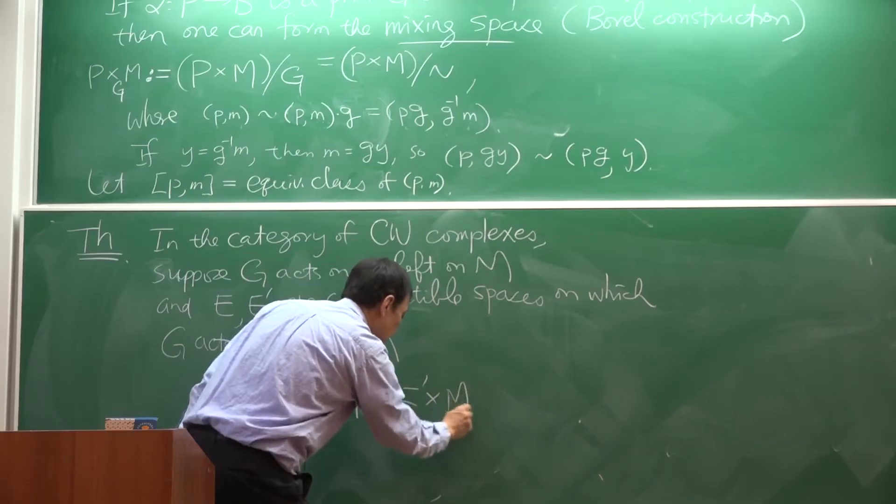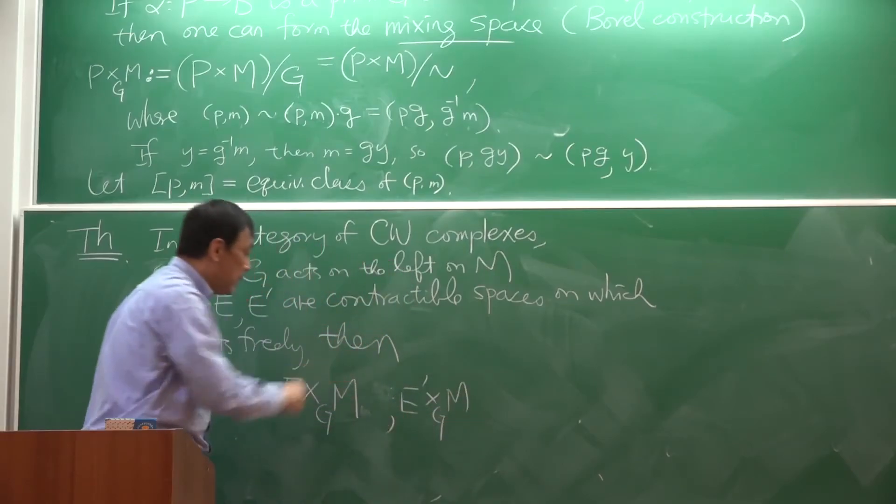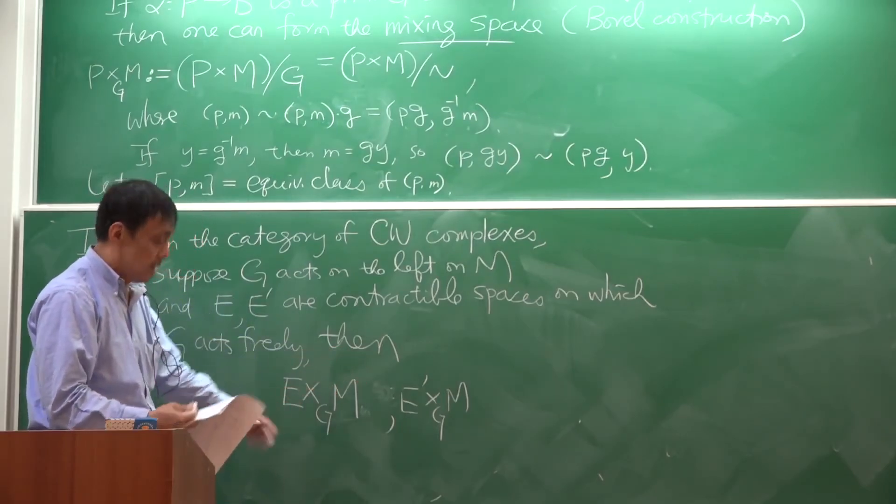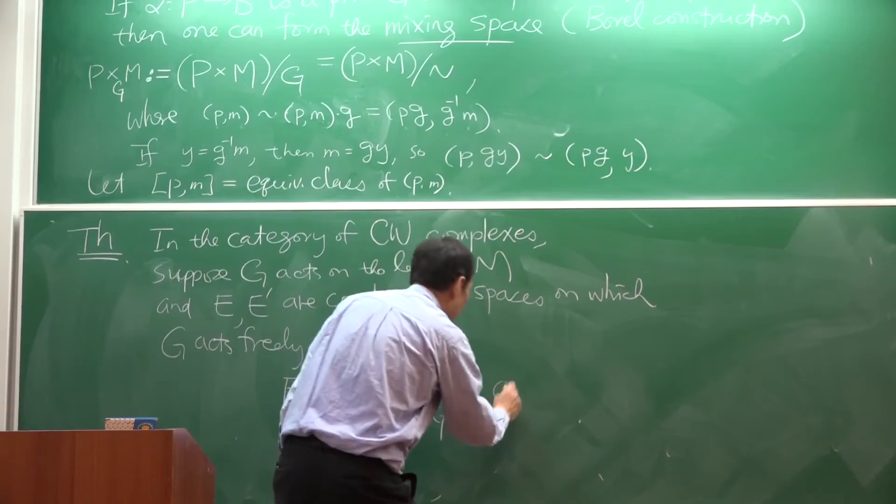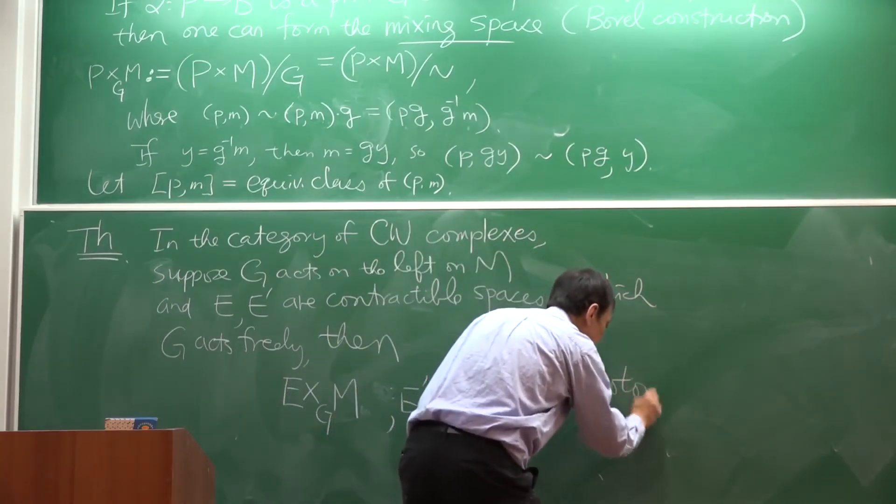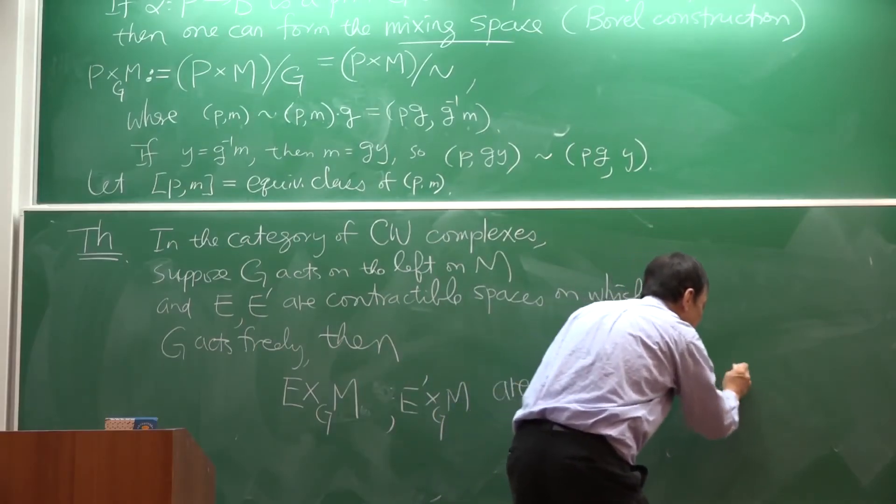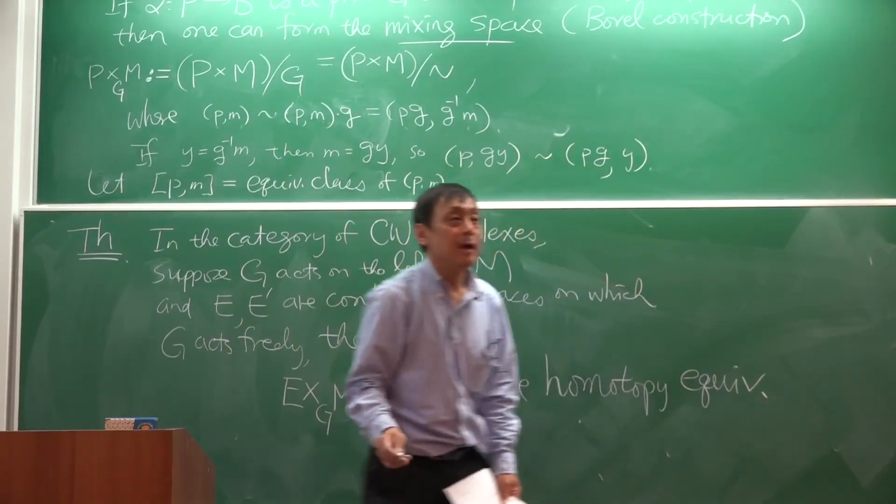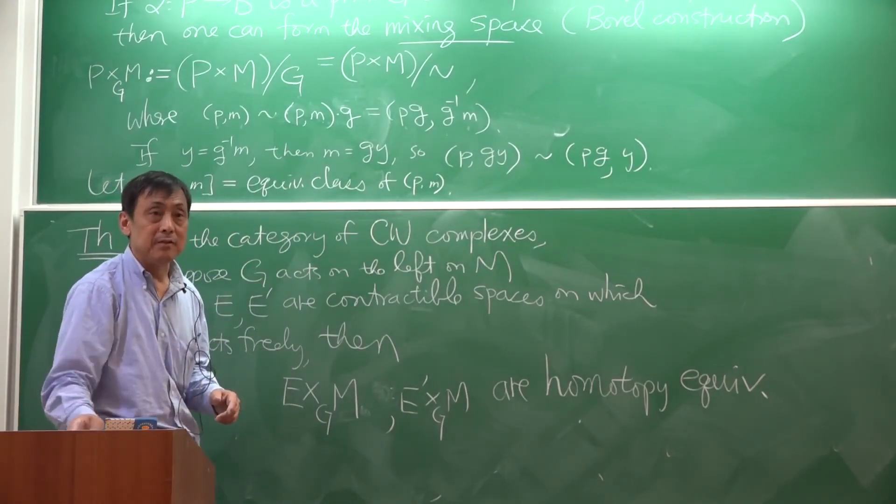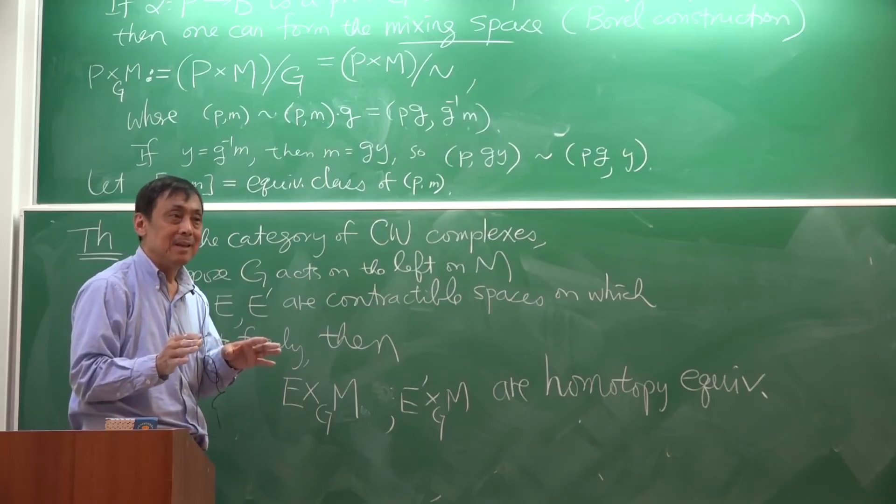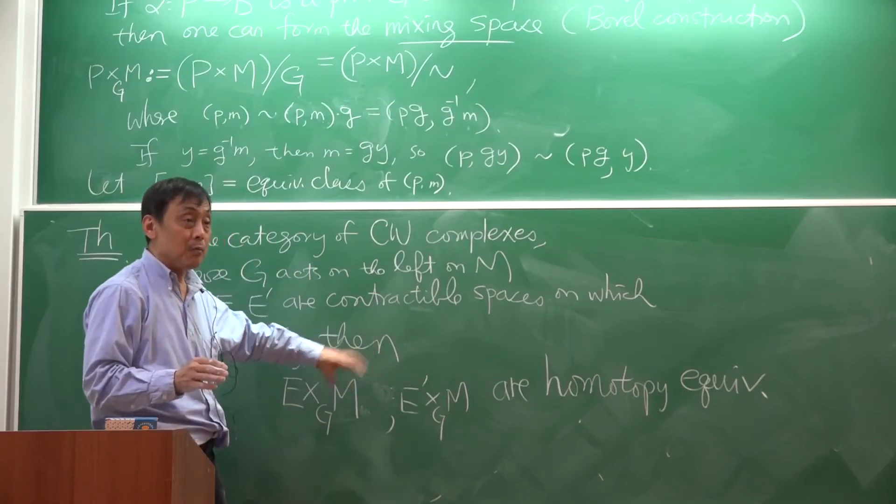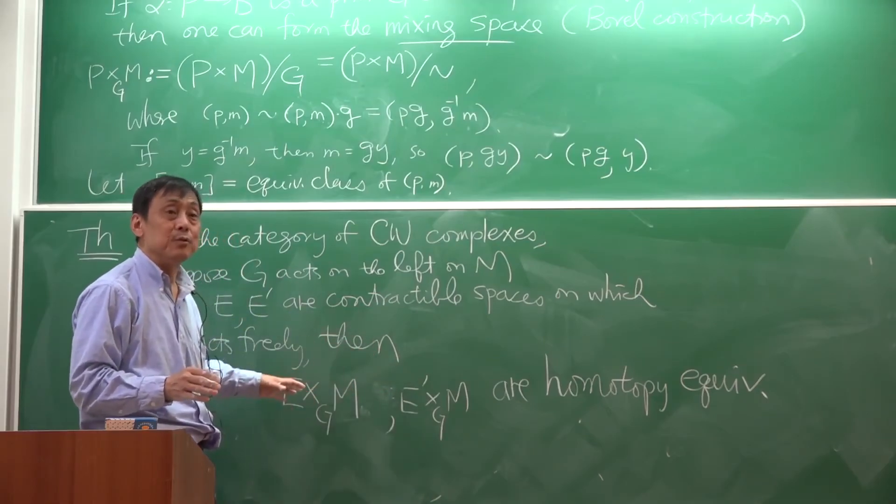Then if you form the homotopy quotient with these two different contractible spaces, then they are homotopic equivalent, okay? And that would prove that equivariant cohomology is well-defined, independent of the contractible space on which G acts freely that you choose, right?